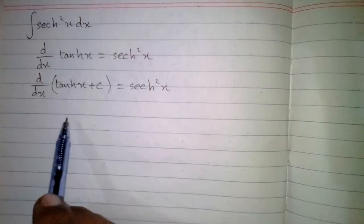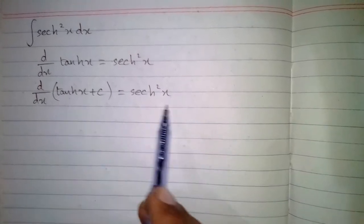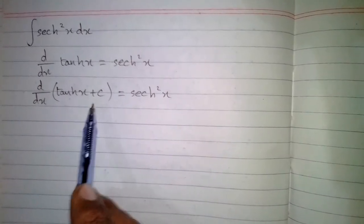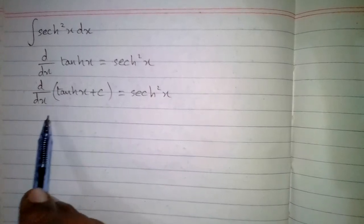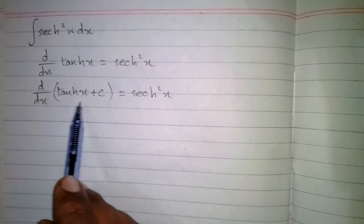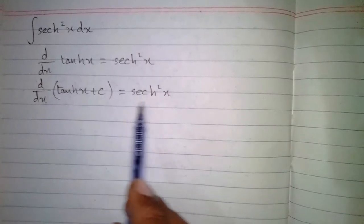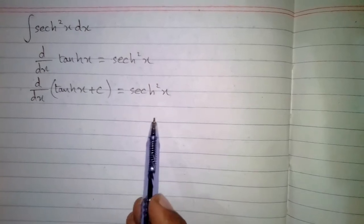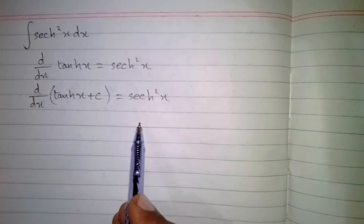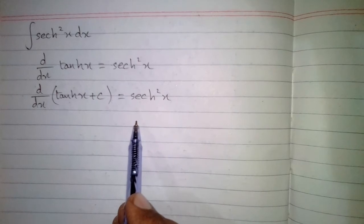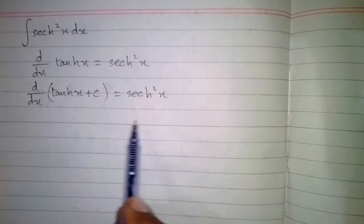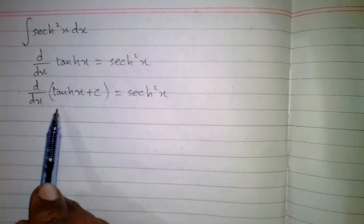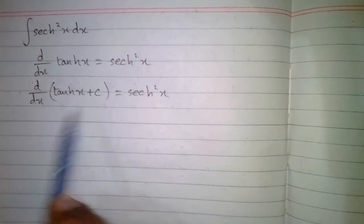The derivative of hyperbolic tan X is hyperbolic sec square X and the derivative of a constant is 0, so the derivative of hyperbolic tan of X plus C is equal to hyperbolic sec square of X. Now since integration is the reverse process of differentiation, the integral of hyperbolic sec square X is equal to hyperbolic tan X plus C.